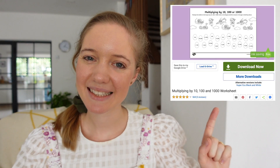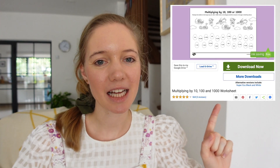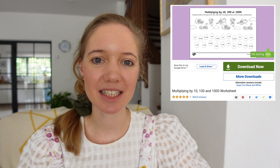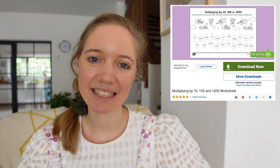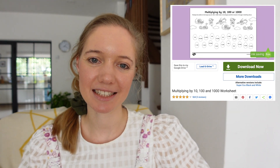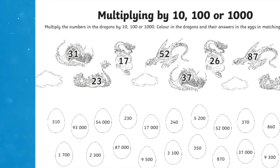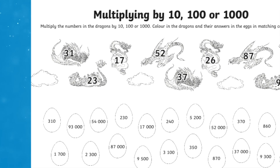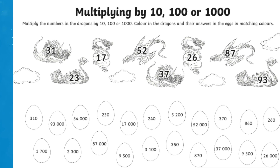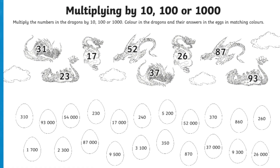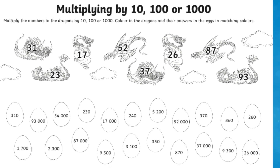This lovely Multiply by 10, 100, and 1000 worksheet would be a fantastic home learning task or morning activity. These engaging sheets ask children to match the eggs to the dragons by multiplying by 10, 100, or 1000, and would be a great way to consolidate this skill.